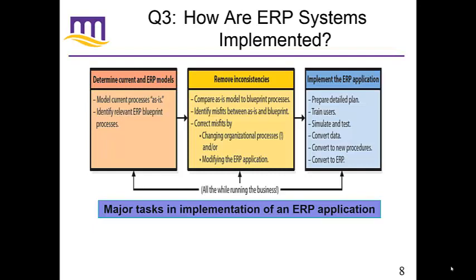Ideally — and I do say ideally because this isn't always true — the ERP institutes industry best practices. Which means there's good reason why your organization might want to modify its organizational process to meet industry best practices. If your current process isn't the best, why don't you change it? It seems to make sense. So often, whenever people go about implementing an ERP system, there's also a business process re-engineering — understanding your business process and re-engineering it so that it matches how the ERP system works. And this is done before you even implement the software.